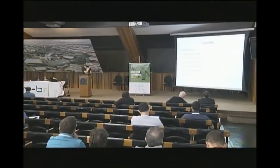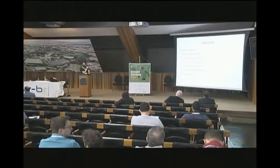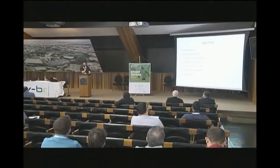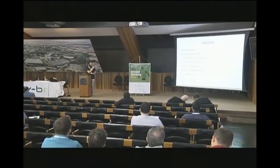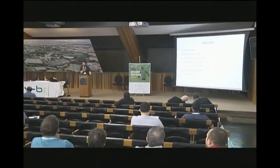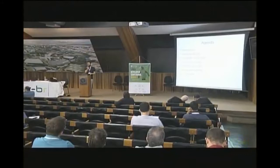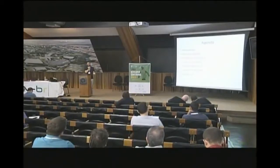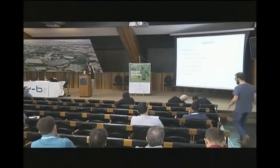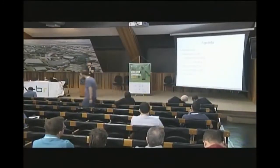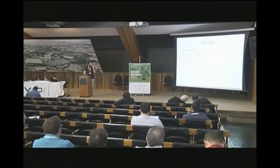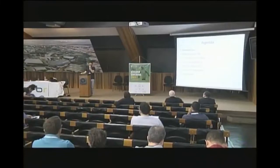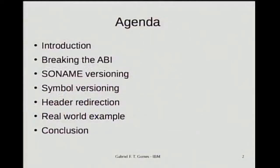So this is what we're going to cover today. I will start with an introduction as usual, and then I will give you the concept of what it means to break an ABI. After that, I will explain what soname versioning is and how it relates to ABI breaks, as well as symbol versioning, which are kind of similar things. After that, I will explain how to use header magic to make some function redirections. When I explain these three parts, I will give you some fictional examples from a fake library I have written especially for this presentation. And after that, I will jump into some real-world examples in glibc, which is the project that I work for at IBM. And in the end, we'll have the conclusion as usual.